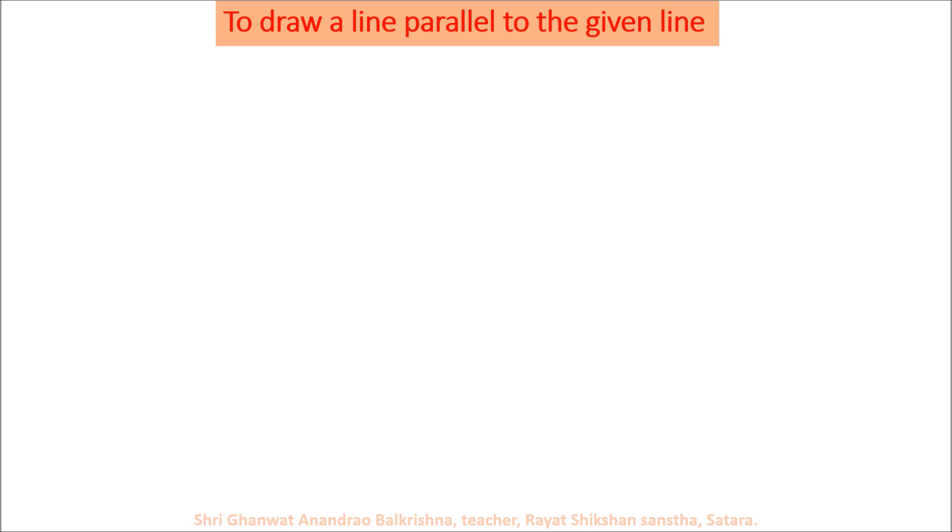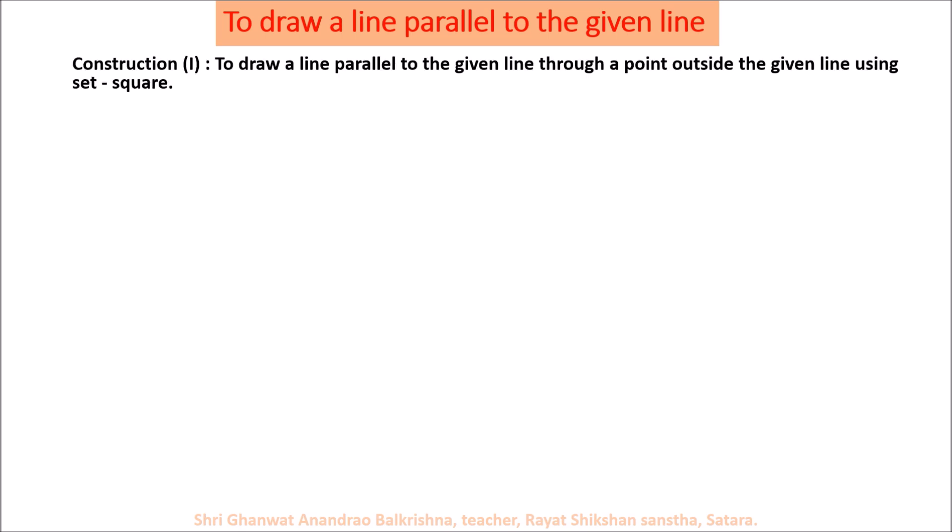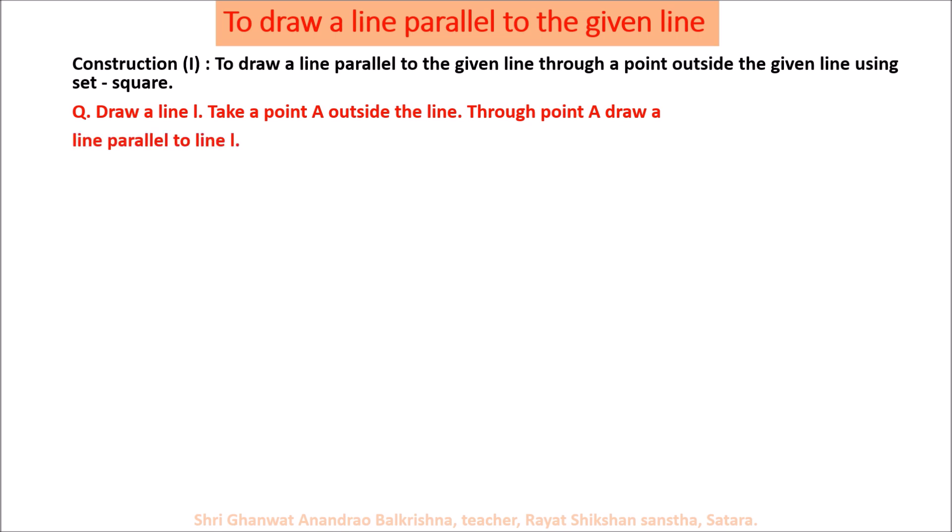In this lecture we are going to learn to draw a line parallel to a given line. Construction: first, to draw a line parallel to a given line through a point outside the given line using a set square. Let us take a question: draw a line L, take a point A outside the line. Through point A, draw a line parallel to given line L. We can do this with two methods. Let us consider method one.